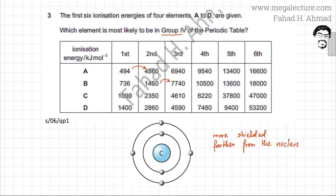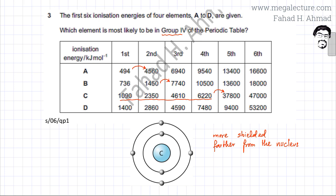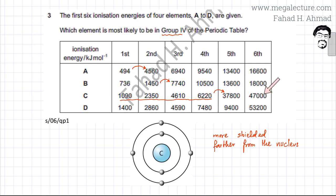Looking at option C: removing the first, second, third, and fourth electrons is relatively easy — the increase in ionization energy is not that drastic. But as soon as you try to remove the fifth electron, there's a very drastic increase. Removing the fourth electron took 6,000 kJ per mole, but removing the fifth electron required 37,000 kJ per mole. This indicates the fifth electron is from an inner shell, closer to the nucleus. So element C has four electrons in its outermost shell.